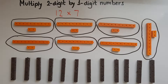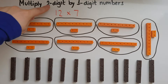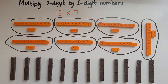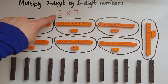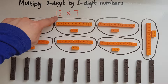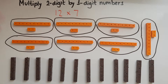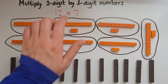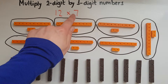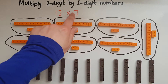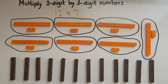In this video we'll learn to multiply two-digit by one-digit numbers. Two-digit numbers are numbers with two digits, like 12, 24, 83 — they have two digits. And 7 is a one-digit number.